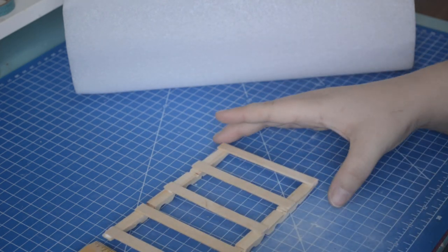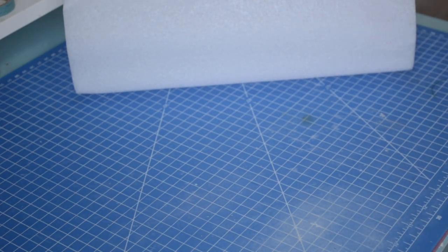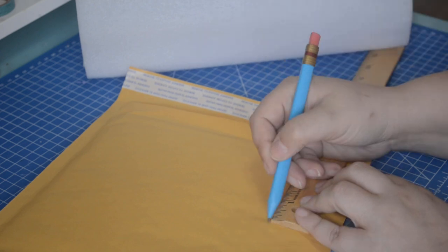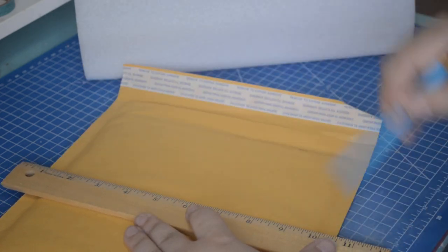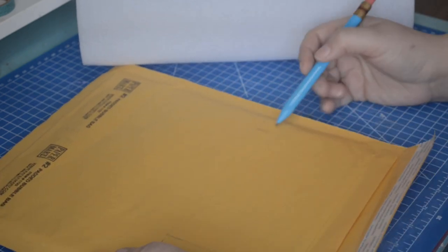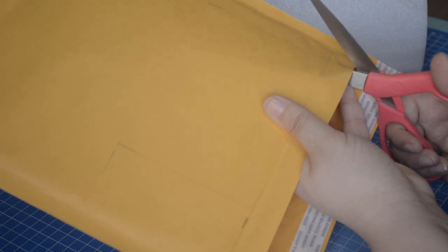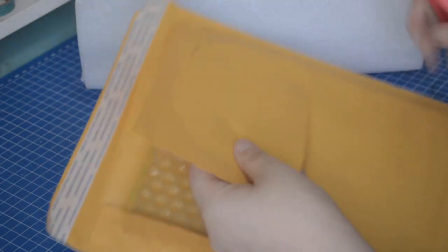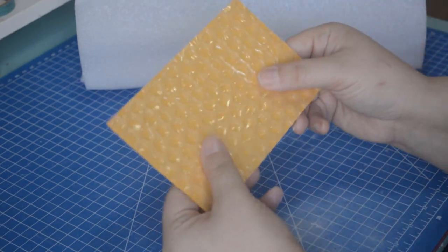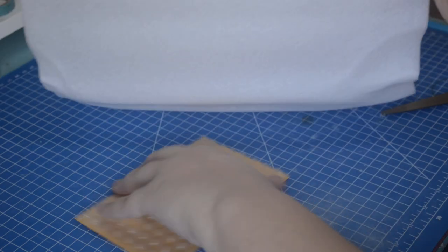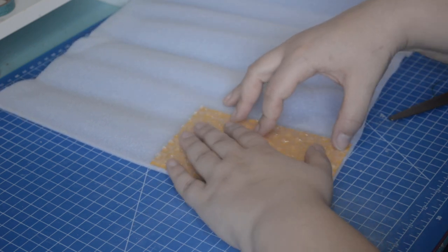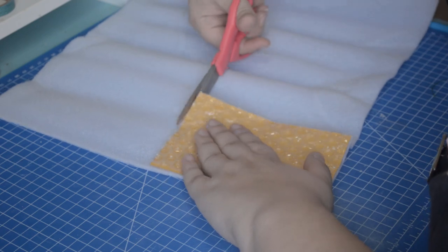Using our bed frame as a guide, we are going to cut out a shape that will fit nicely. I used one layer of bubble mailer and two layers of foam to make it nice and squishy.